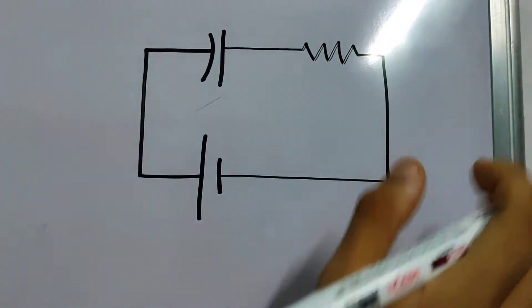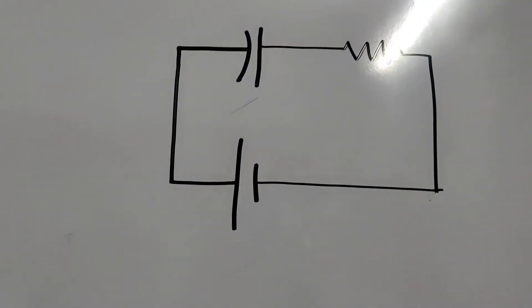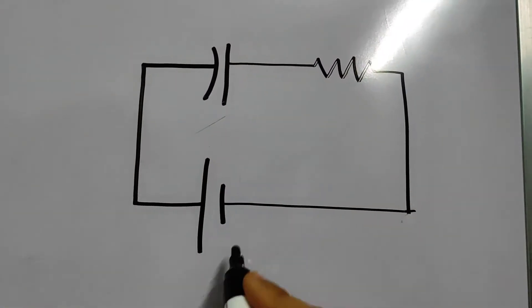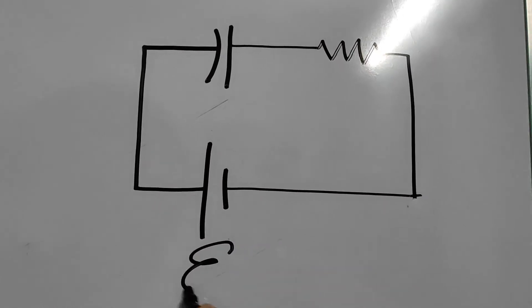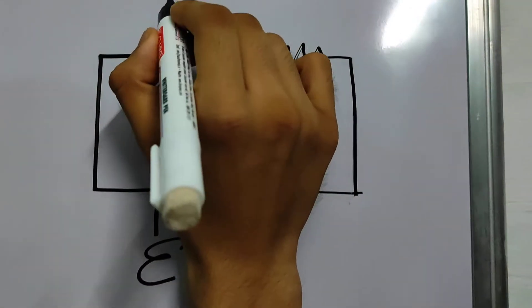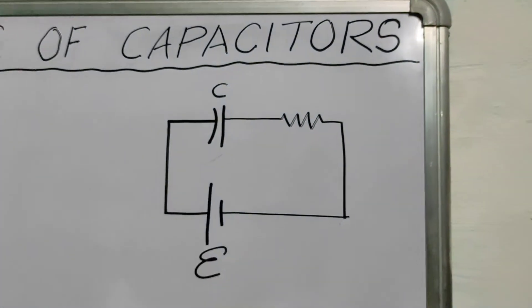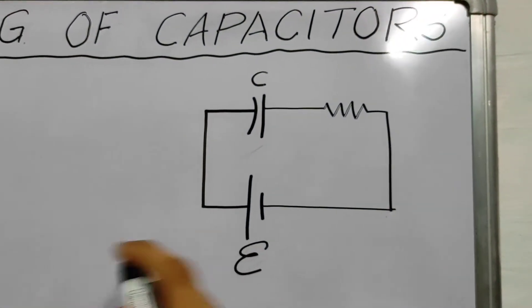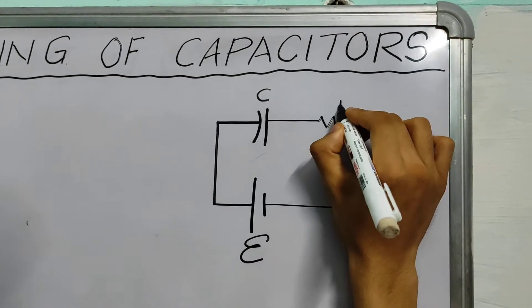You can add other elements. You can add a switch, you can add a key, whatever you want. Now this battery has an EMF, E. Let us call this E. The capacitance of this capacitor is C. And the resistance of this resistor is R.